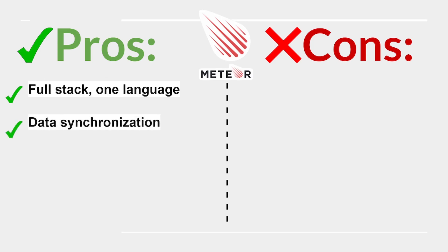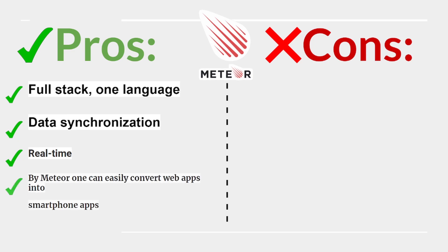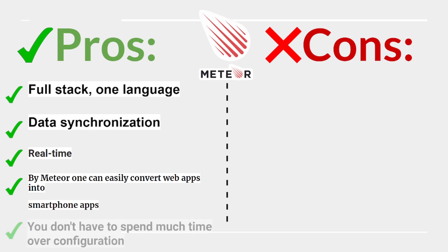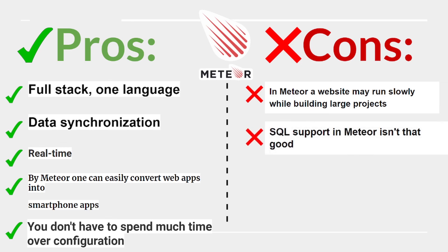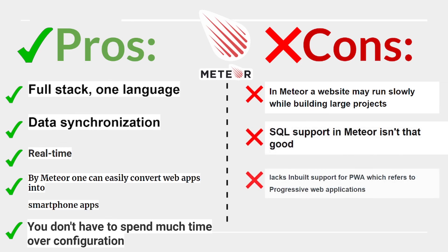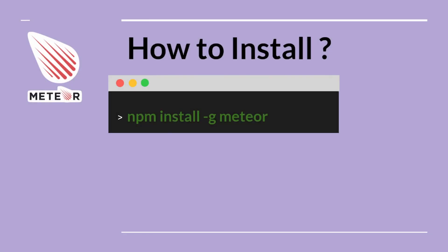Meteor also lets you easily convert web apps into smartphone apps, and you don't have to spend much time on configuration. Cons: a website may run slowly when building large projects in Meteor, SQL support isn't that good, and it lacks built-in support for PWAs (Progressive Web Applications). To use Meteor, run npm install -g meteor.